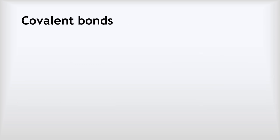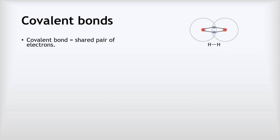So what is a covalent bond? The simple answer is that a covalent bond is a shared pair of electrons. That's a two-mark answer in an exam: one mark for saying shared electrons and the second mark for saying that it's a pair. So here we've got the covalent bond between two hydrogen atoms, and what you can see is in between the two nuclei there, you've got that shared pair of electrons. So that is our covalent bond.